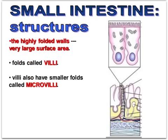The small intestine's functions are digestion and absorption. Absorption in the duodenum and ileum requires a large surface area for rapid monomer uptake, so these regions have highly folded walls — approximately the size of a tennis court in surface area. These folds contain finger-like projections called villi (singular: villus), and on top of each villus cell are microvilli, which increase the surface area even further.